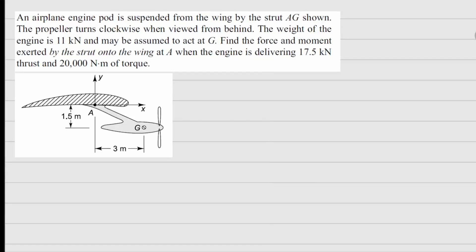This is problem 1.19. It says an airplane engine pod is suspended from the wing by the strut AG. The propeller turns clockwise when viewed from behind. The weight of the engine is 11 kN and may be assumed to act at G. Find the force and moment exerted by the strut onto the wing at A when the engine is delivering 17.5 kN thrust and 20,000 Nm of torque.